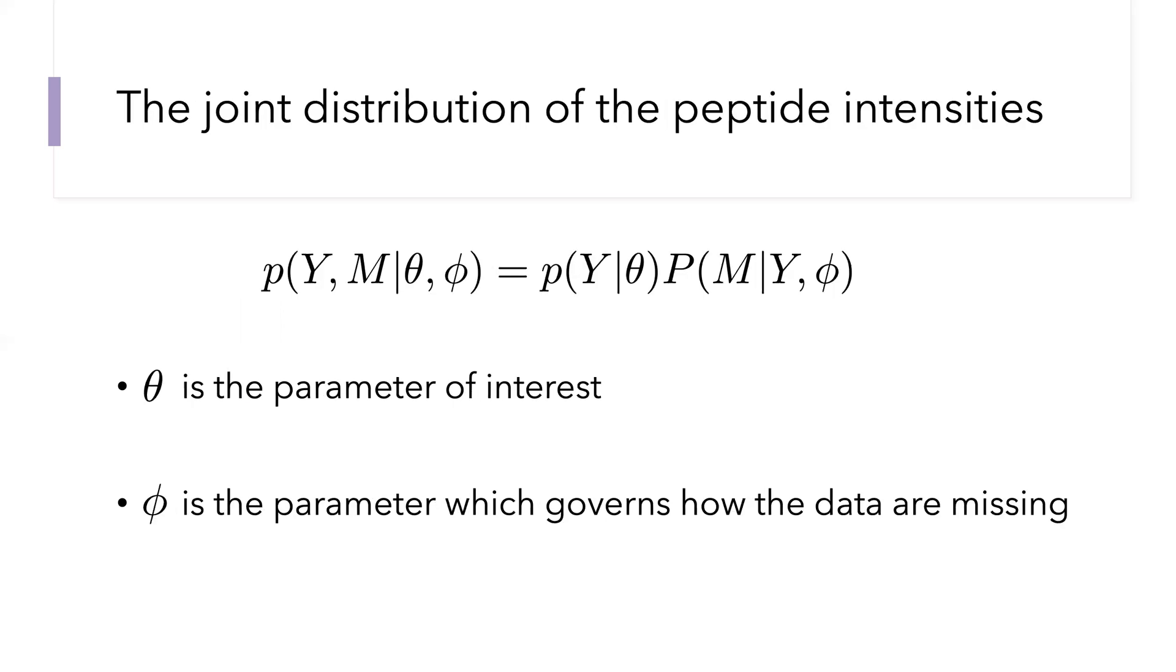To do that, we need to think about the joint distribution of peptide intensities and the matrix of missingness indicators. We're going to write this joint distribution. We're going to model the peptide intensities and which ones were observed given two parameters.